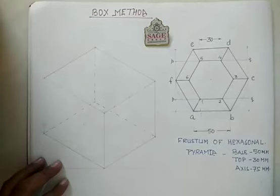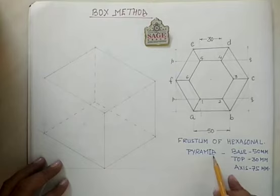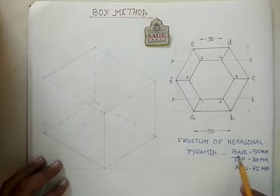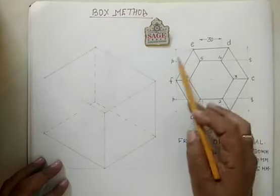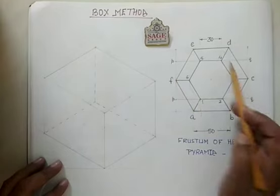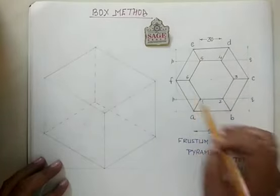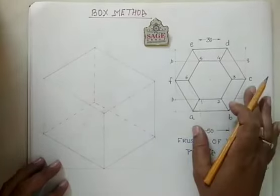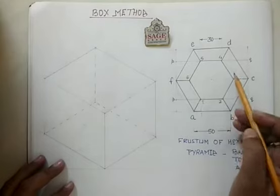I have selected a problem on the frustum of a hexagonal pyramid. The lower base is 50 mm side, the top base is 30 mm side, and the axis is 75 mm. I have drawn the top view of this system, which shows two hexagons — one of 50 mm side and one of 30 mm side. There is no need to draw the front view since the height is given.